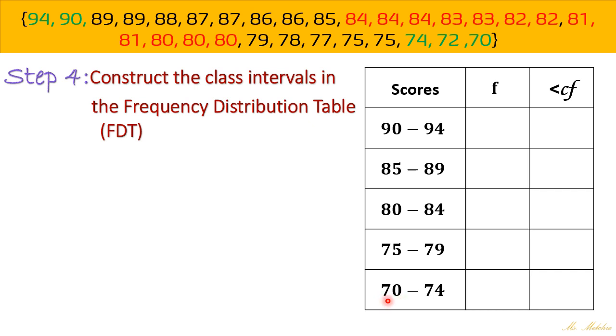And then a while ago, we were able to solve for class size or class width, which is 5, right? So 70, you just count 70, 71, 72, 73, 74. So we do have 5 numbers there included in that class. So that's the first class, so 70 to 74.